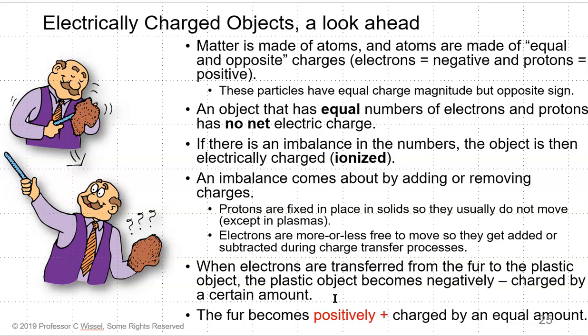When electrons are transferred from the fur to the plastic object, the plastic object becomes negatively charged by a certain amount. The fur becomes positively charged by an equal amount.